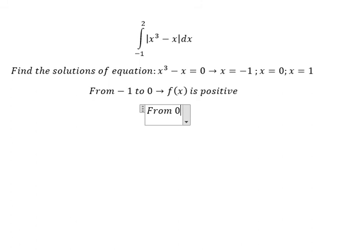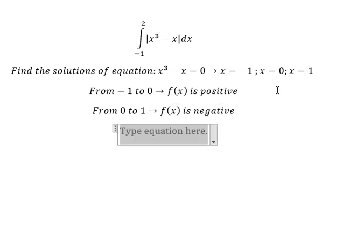From zero to one, f of x is negative. And the next one, from one to two, f of x is positive.